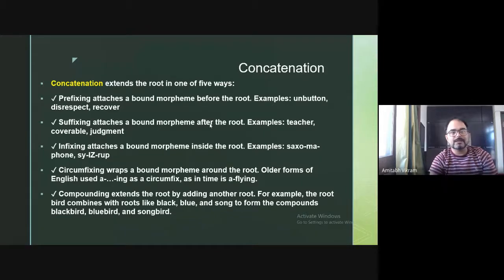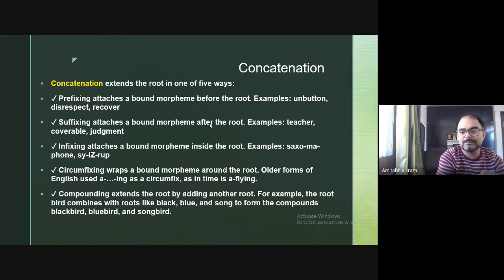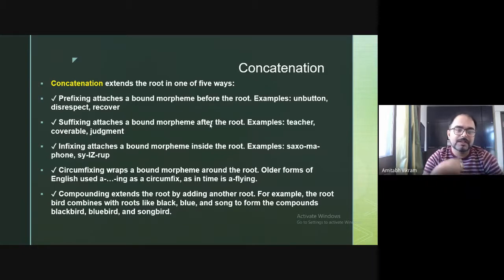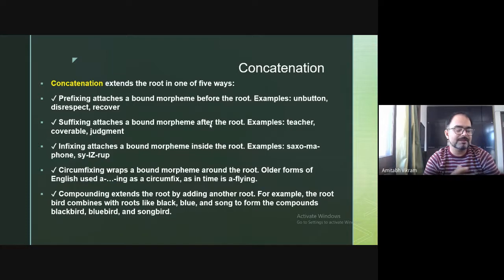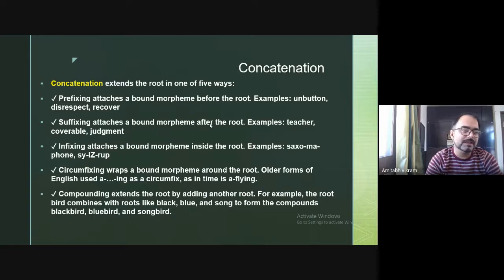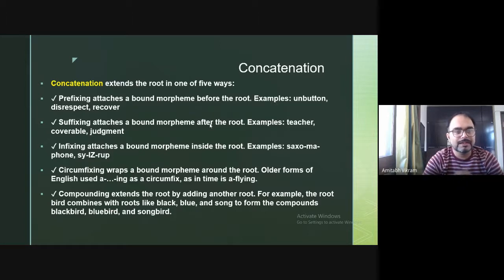Concatenation extends roots in one of five ways. The first is prefixing, which attaches a bound morpheme before the root. For example, 'happy' becomes 'unhappy.' Other examples: 'button' becomes 'unbutton,' 'respect' becomes 'disrespect,' and 'cover' becomes 'recover.' Prefixation is very common and you have been using it since you began studying English.